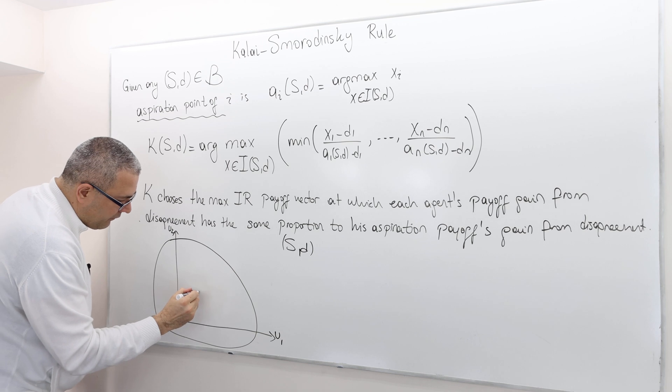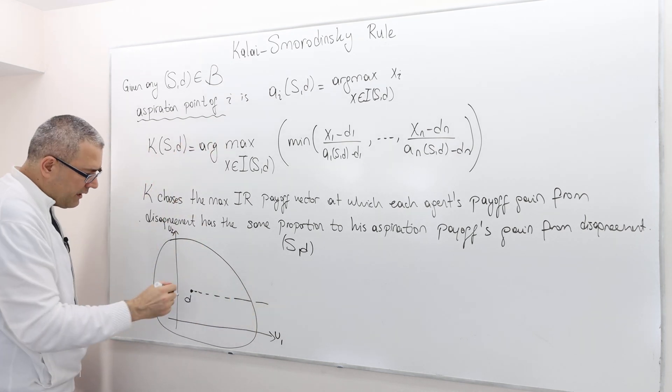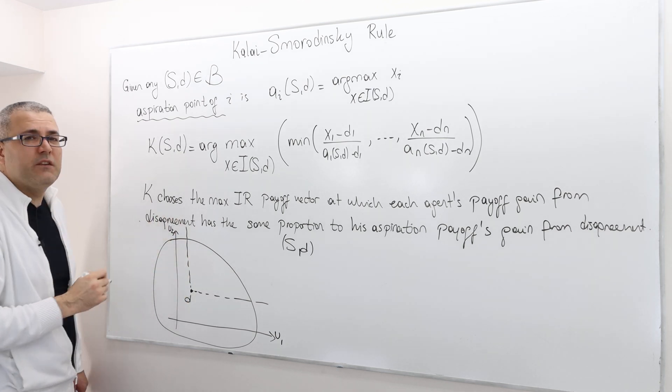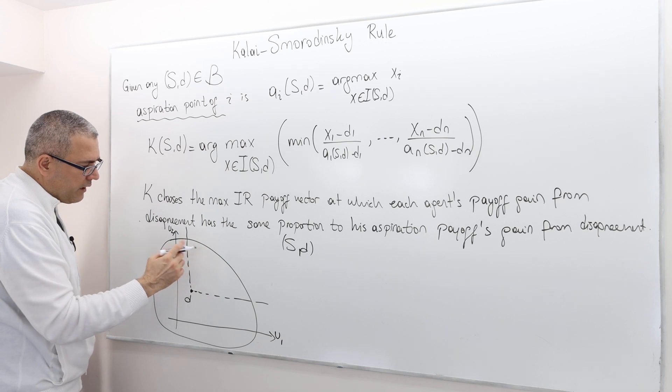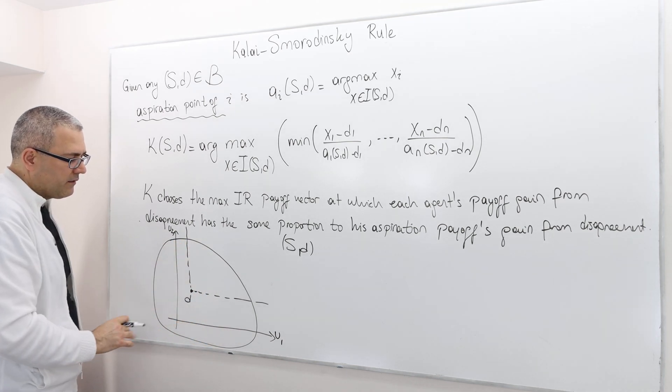First off, in the Kalai-Smorodinsky rule, we only care about the individually rational payoffs. Therefore, it's this region, not the rest.